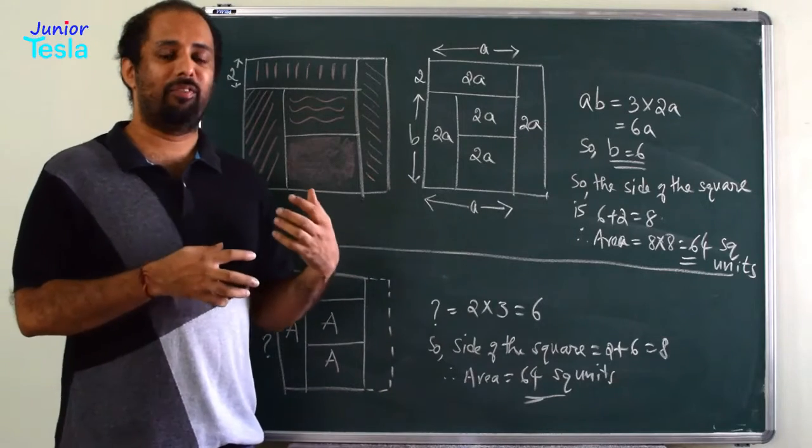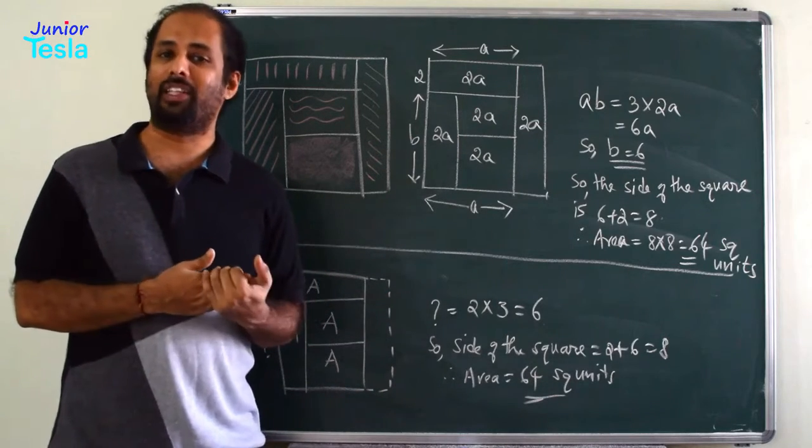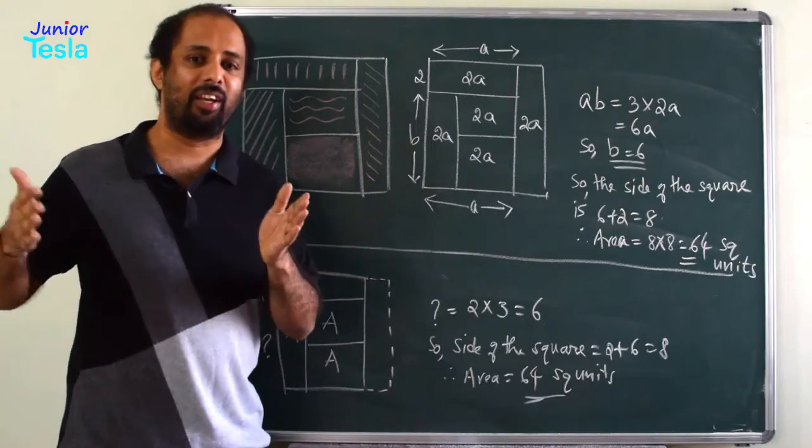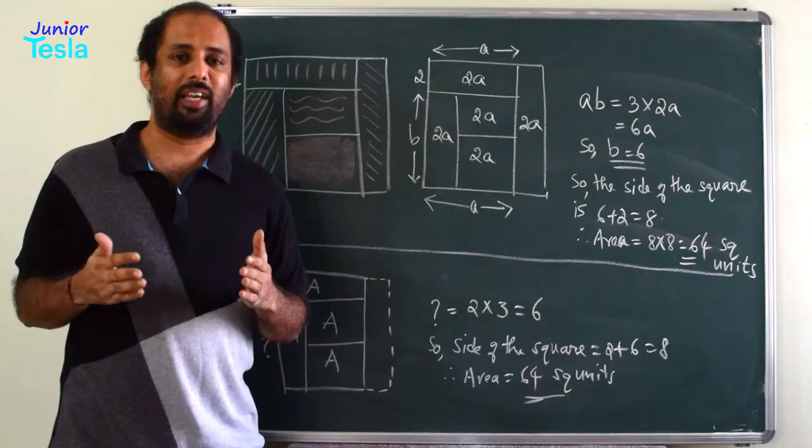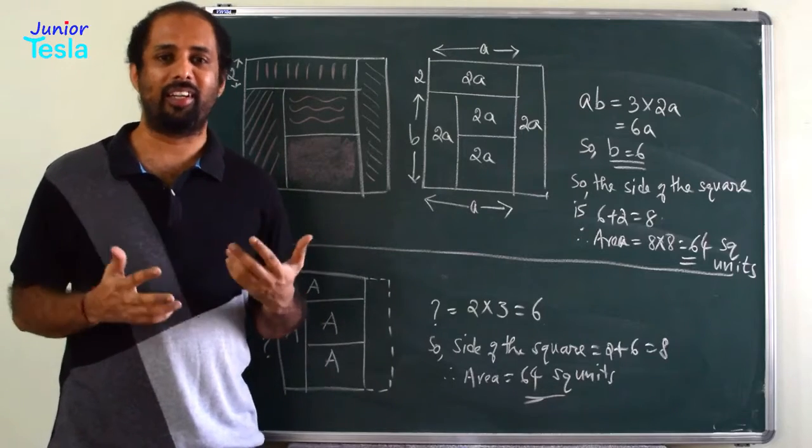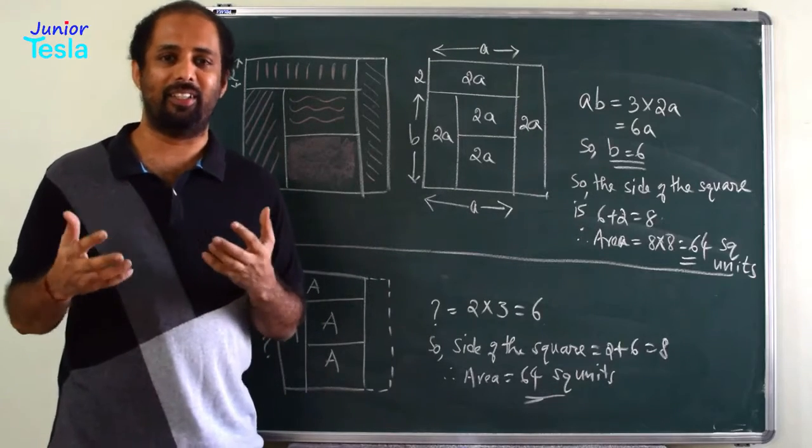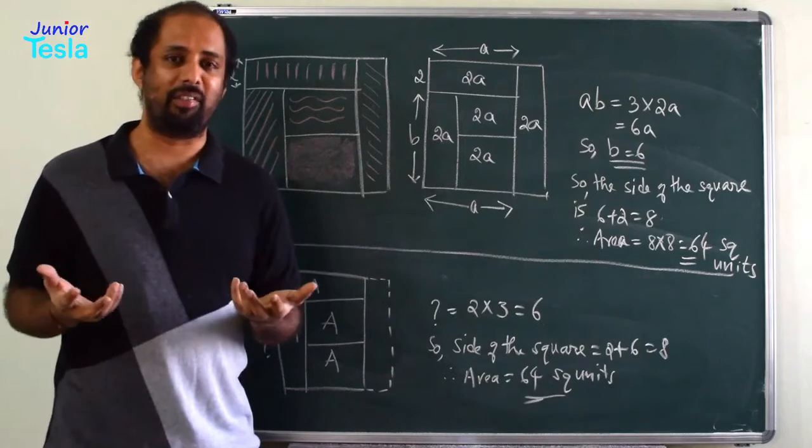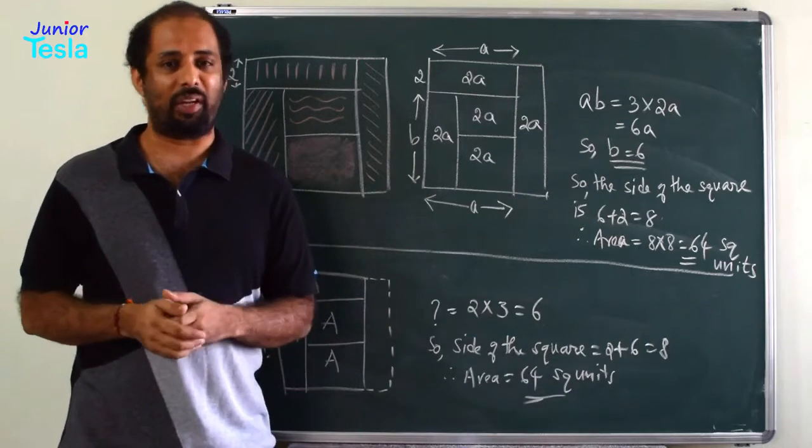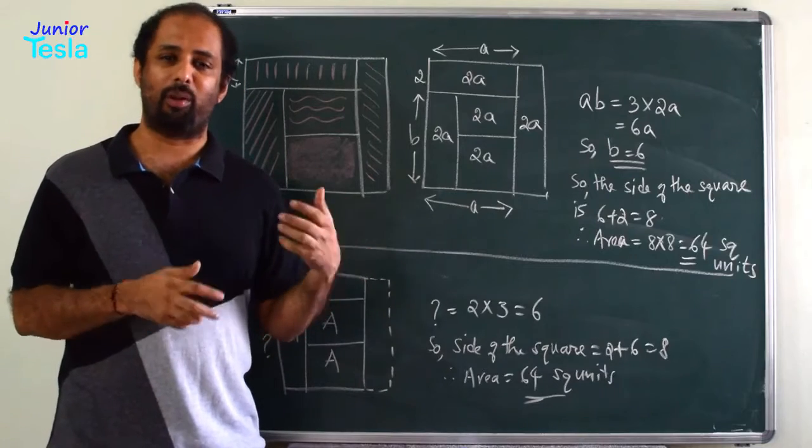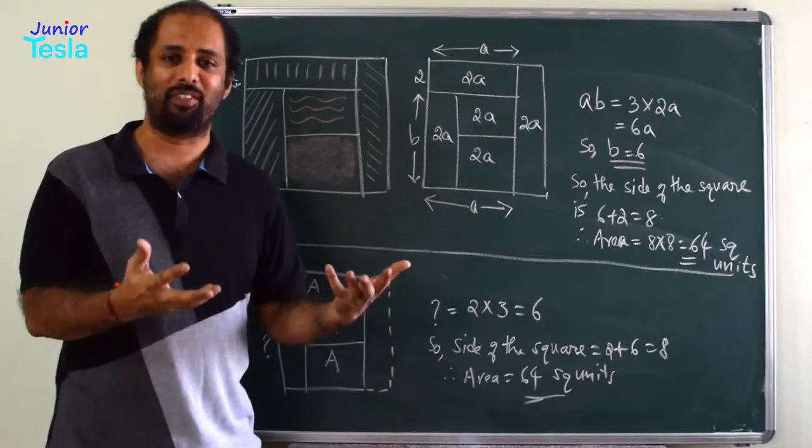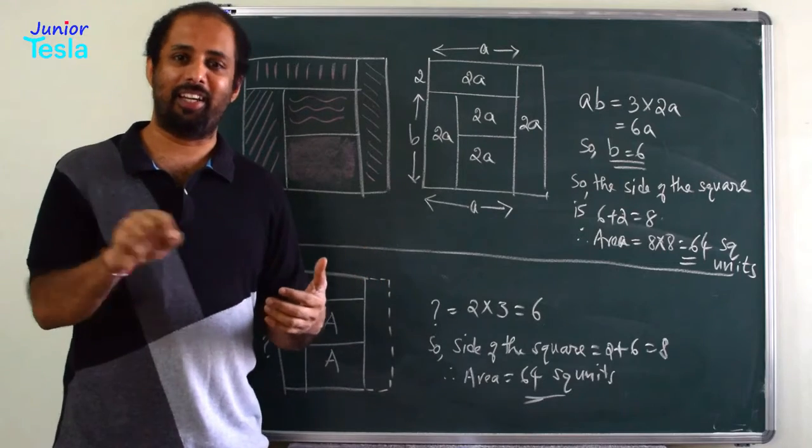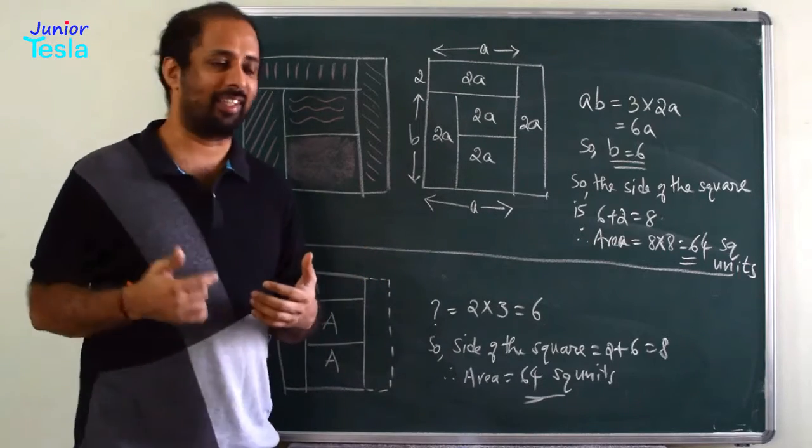In the first solution, in our previous episode, what we had done is, we had taken the problem and directly started working out. We started giving different values for the dimensions A, B, C, D, X, Y, Z, and tried to find the areas of different regions using those unknowns, compared them, found the values of A, B, C, and finally, we got the total area of the square. That is what normally everybody, more than 90% of the students, math students do. They take the problem directly, start working out, start writing X, Y, Z and try to get the solution.